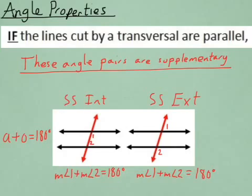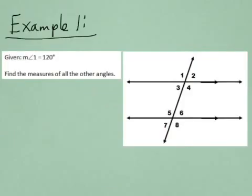Now that we've established that, let's look at a few example problems. Here's example one. We're given that measure of angle one is 120 degrees, and we're asked to find the measures of all the other angles.